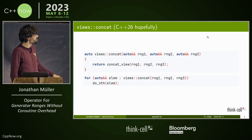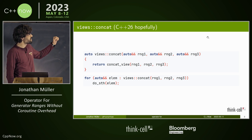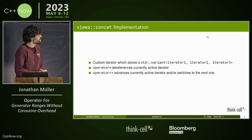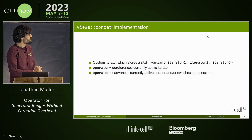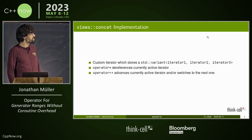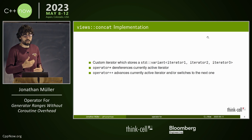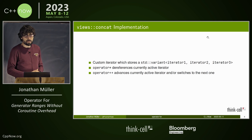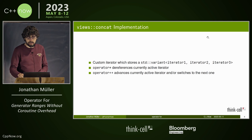We've nicely separated the concatenation from the per-element work. The implementation of views::concat is a bit convoluted. Essentially we need to store a variant of each potential iterator type, then operator* needs to dereference the current one, and operator++ advances it or switches to the next range. That's a bit tricky — there's a reason this is not in the standard library yet.